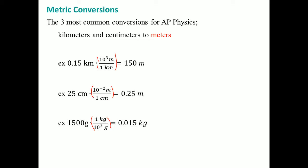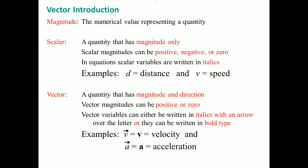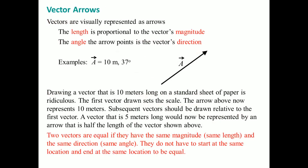Let's talk about vectors now. First of all, the magnitude represents a quantity. A scalar refers to the magnitude only - there is no positive or negative associated with it. Sometimes you see it written in italics. A vector has both magnitude and direction. Vector magnitude can be positive or zero and is written in italics with an arrow. Notice that velocity can be written as v with an arrow, or you could bold the v. Acceleration can be written with an arrow and bolded a. Distance would be your scalar, speed would also be a scalar. But if you put v here with the arrow it means velocity, a with the arrow means acceleration.